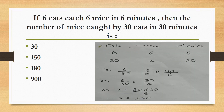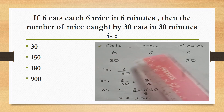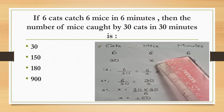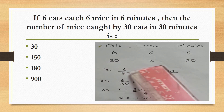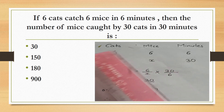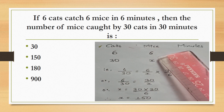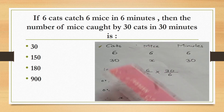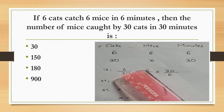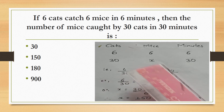If 6 cats catch 6 mice in 6 minutes, then how many mice are caught by 30 cats in 30 minutes? So, 6 cats catch 6 mice in 6 minutes. The number of mice is direct proportion. So, 6 by 30 equals to 6 by x into 30 by 6. We will solve the value of x.